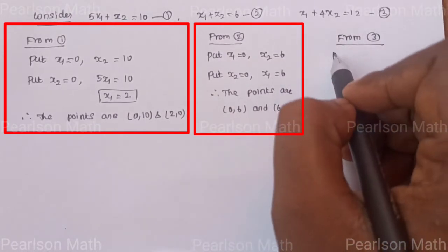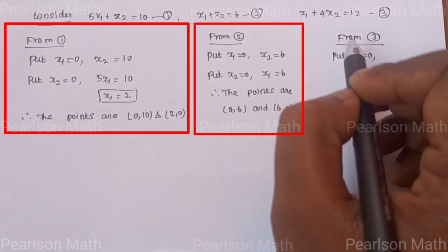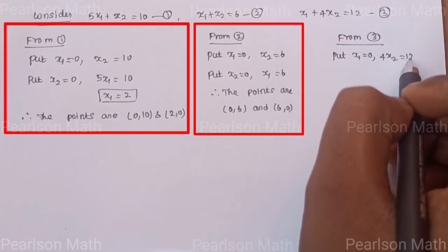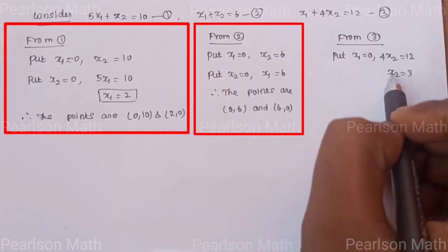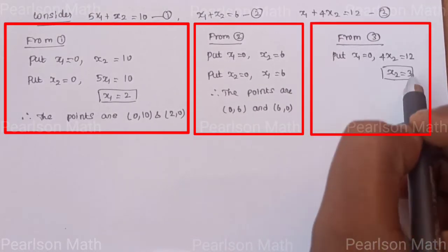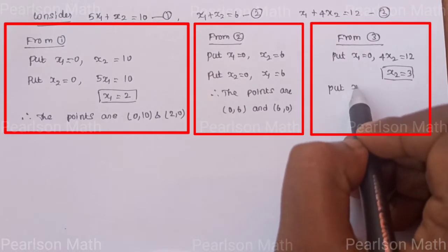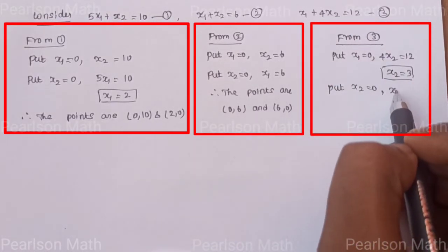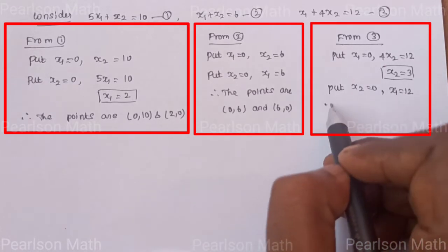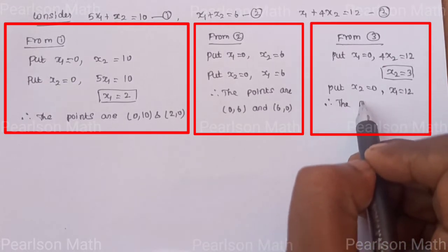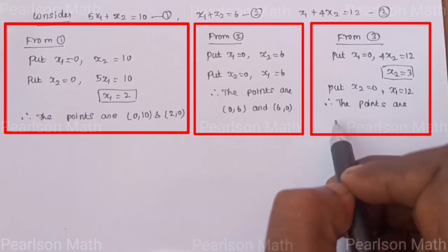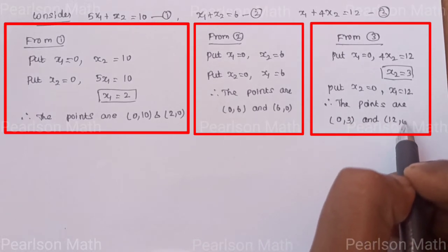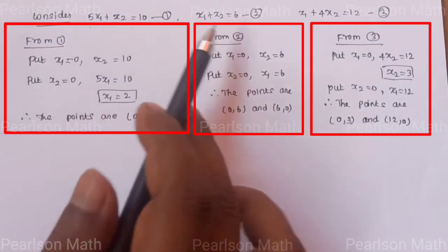For the third equation, put x1 equal to 0, then 4x2 equal to 12, so x2 equal to 12 by 4, which is 3. Put x2 equal to 0, then x1 equal to 12. Therefore, the points are (0, 3) and (12, 0).